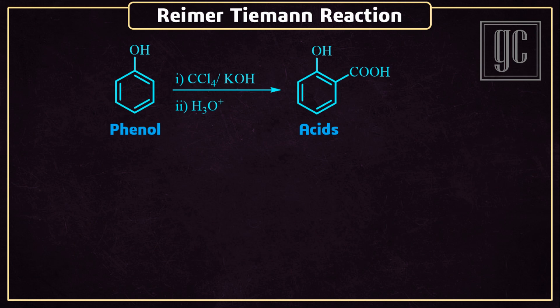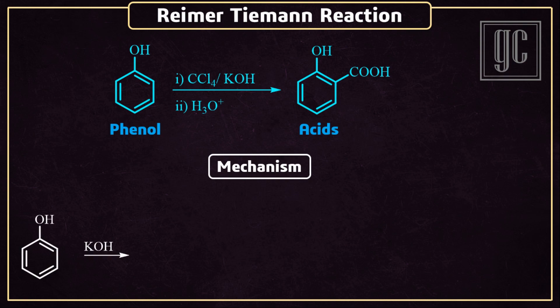Next is the Reimer-Tiemann reaction with carbon tetrachloride. In this reaction, acids are formed rather than aldehydes. Carbene as an intermediate is not formed because carbon tetrachloride does not form carbenes. The mechanism is the same as described for the above reaction: in the presence of strong base, one proton is removed from the hydroxyl group and a phenoxide ion is formed.